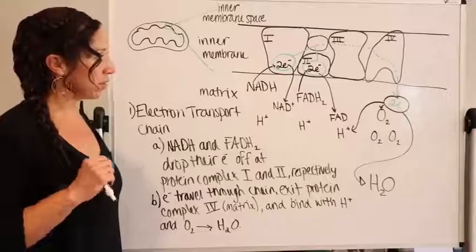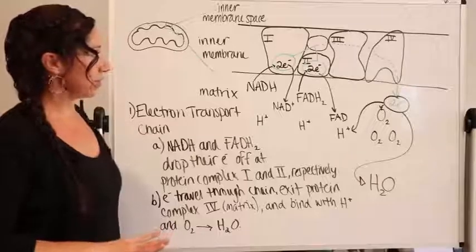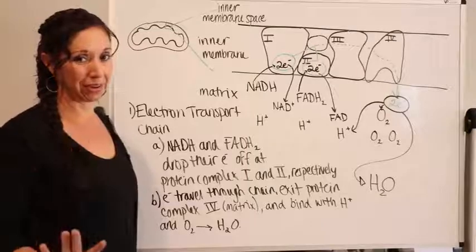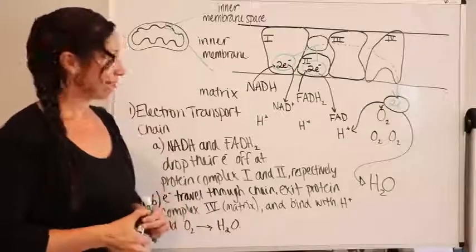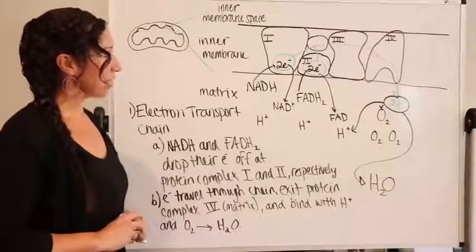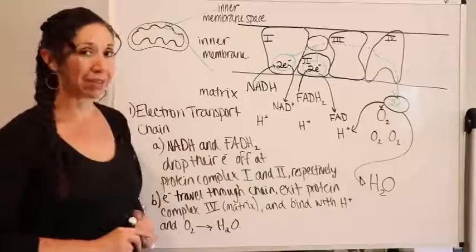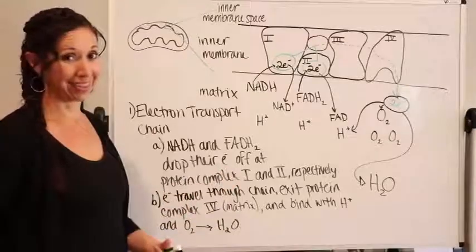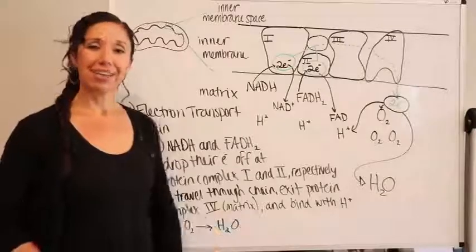That is the electron transport chain. I'm going to stop here and pick it up for the second part of oxidative phosphorylation, which is chemiosmosis. This is where we finally get to make tons and tons of energy so your cells can thrive. We'll see you soon for chemiosmosis.